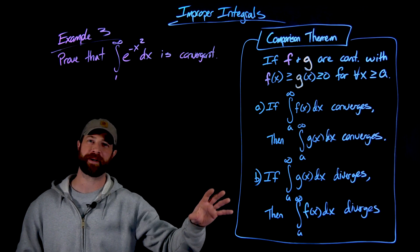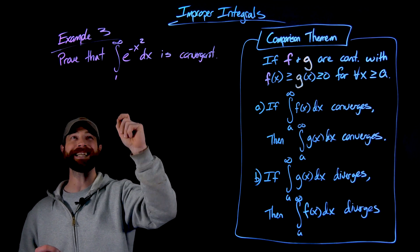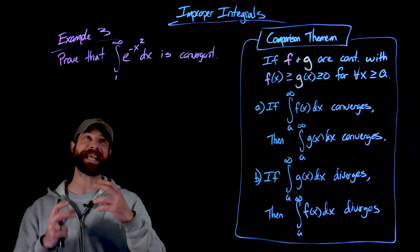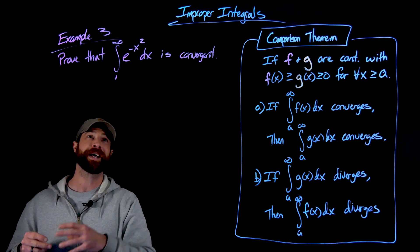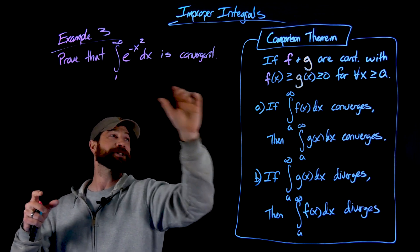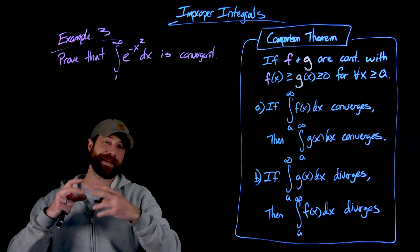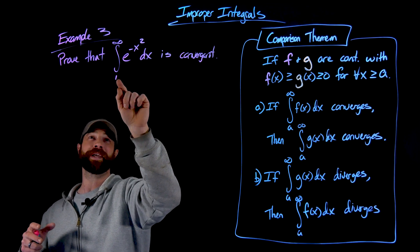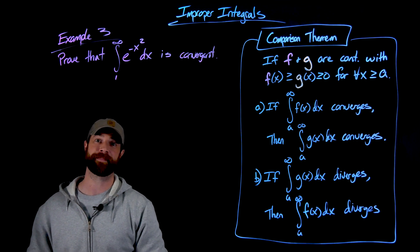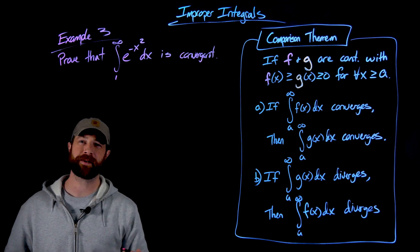In this example we're going to use the comparison test. We're asked to prove that this integral is convergent. As you've seen before, e to the negative x squared does not have an algebraic antiderivative, so we don't have a mechanism to actually calculate this. But we can use a proxy function — a function that converges but is bigger than this. If we can find such an f of x that converges and is greater than g of x, we can prove that the area under e to the negative x squared from one to infinity does exist.